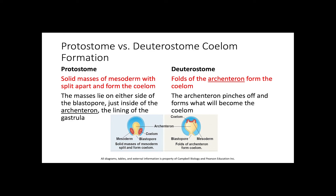For deuterostomes, the folds of the archenteron form the coelom. If you look at the right side of this figure, you're going to see that essentially the archenteron pinches off, and that is what eventually becomes the coelom.